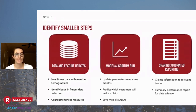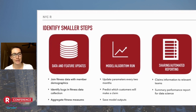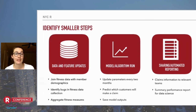The first bucket is data and feature updates. At the beginning of a data science project you're doing a lot of data cleaning, investigating outliers, and handling missing data. In our case, we have diet and Fitbit information on a daily level that we need to aggregate to the monthly level. Examples of code in this bucket include joining fitness data with member demographics, identifying and fixing data bugs, and aggregating those measures to get them to the monthly level.